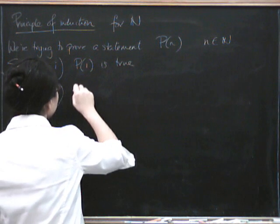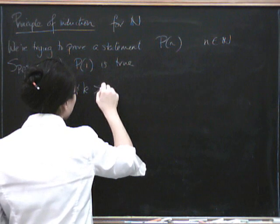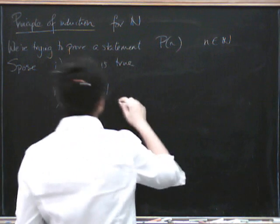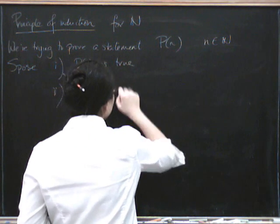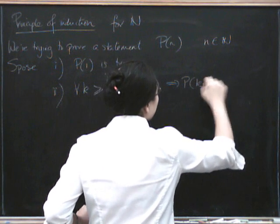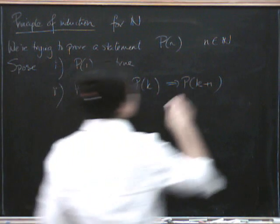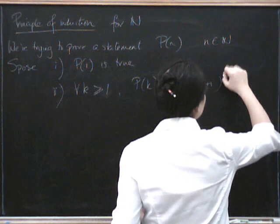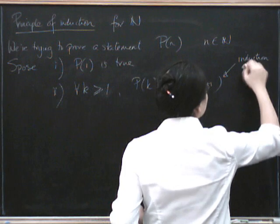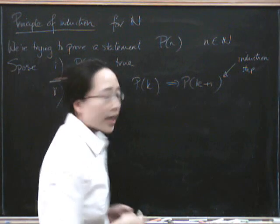And then also, suppose that for all K greater than or equal to 1, we have the induction step. For all K greater than or equal to 1, P(K) being true implies that it's true for K plus 1. So this is the induction step. It says if you've done it for K, then you can do it for K plus 1.